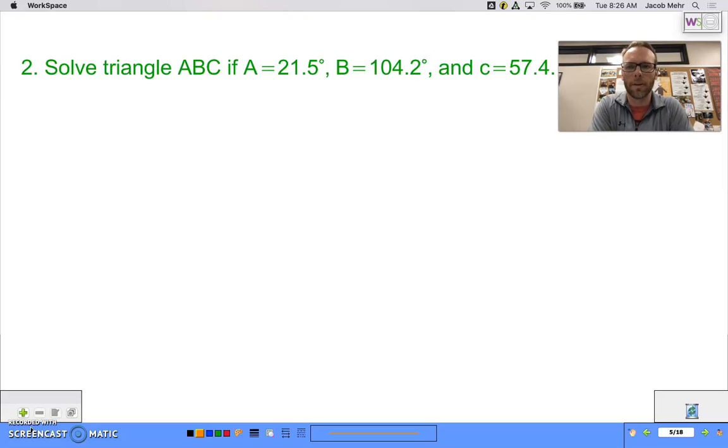All right, so let's look at another one here. We're going to solve triangle ABC. I give you that A is 21.5 degrees, B is 104.2 degrees, and c is 57.4 in length.